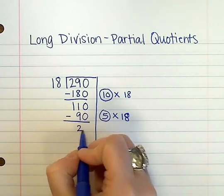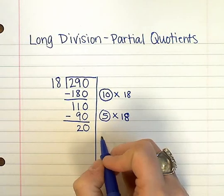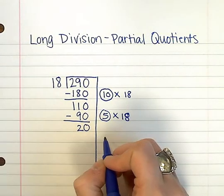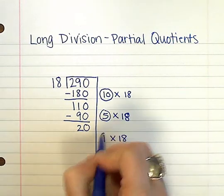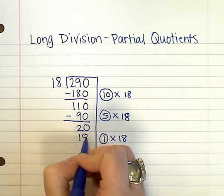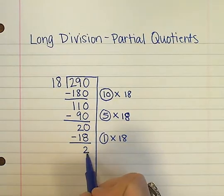And if I subtract, I still have 20 pieces left. So I want to ask myself, how many groups of 18 can go into 20? I still have one group of 18 that could go into 20, and I'm left with 2. I can't fit any more groups of 18 into 2.